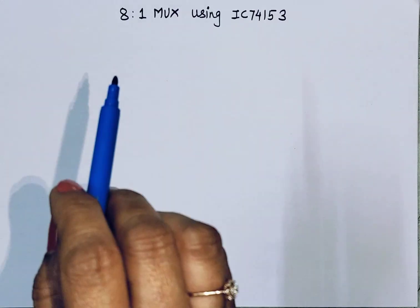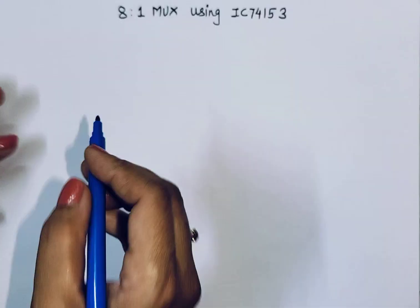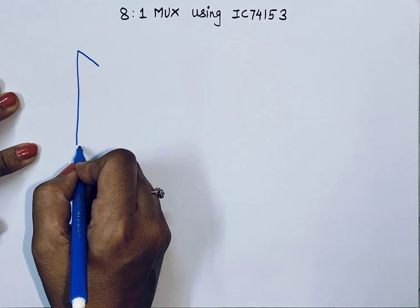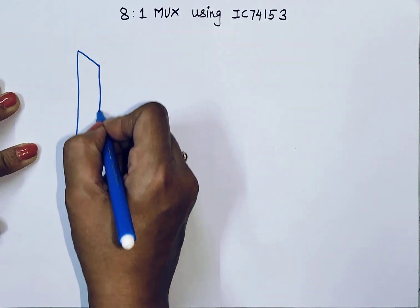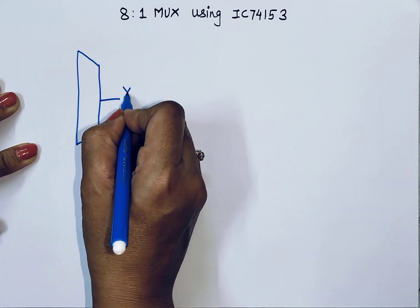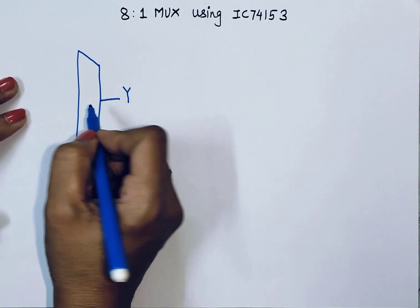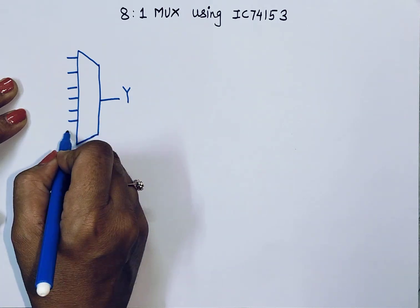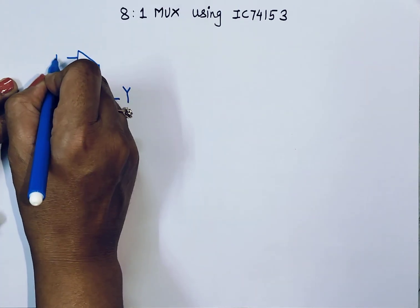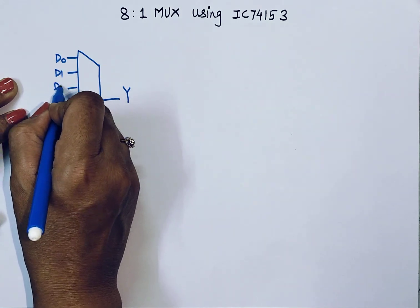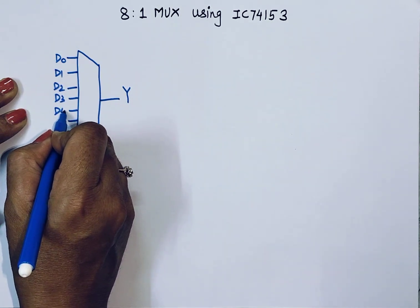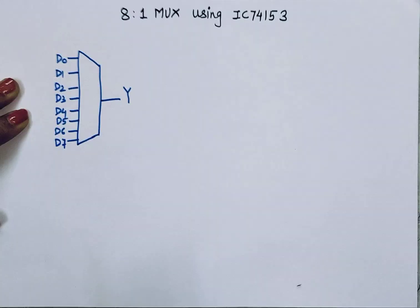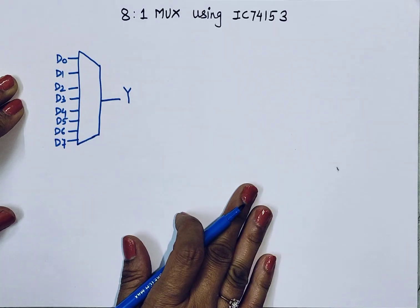Our circuit is an 8-to-1 multiplexer, which means it has 8 data inputs and 1 output. I'll simply draw the symbol — one output and 8 data inputs: D0, D1, D2, D3, D4, D5, D6, and D7.